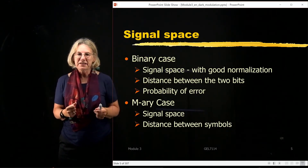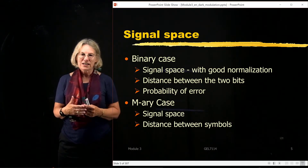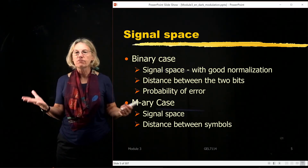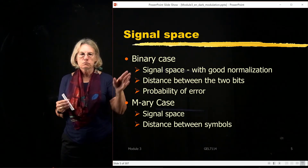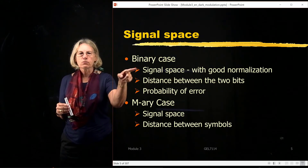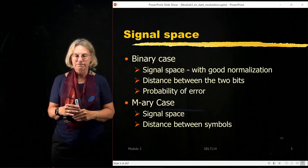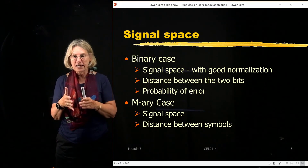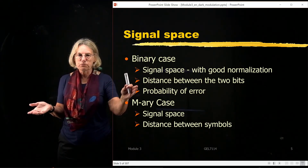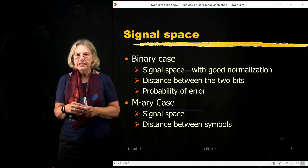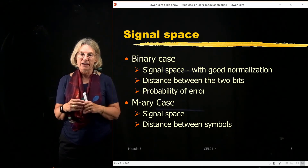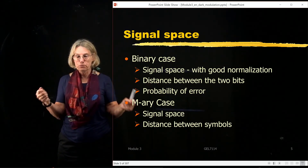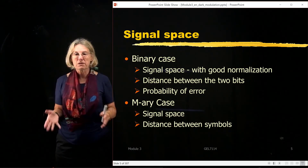This is going to be a lengthy module, and I'd like to discuss different ways we're going to attack the problem. We can look at the binary case, and we can look at the M-ary case when M is larger than two. We'll start with the binary case because it's easier, look at signal space, and talk again about normalization — the concept we introduced when we looked at on-off keying and antipodal keying and how the distance between two bits influences the probability of error. For the M-ary case, things are more complex because we'll have distances between multiple symbols in a constellation.